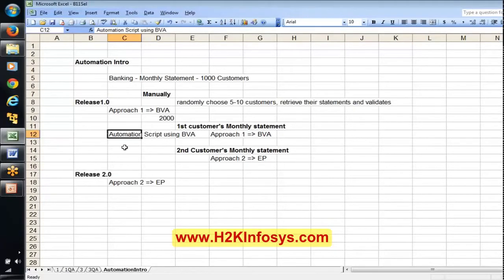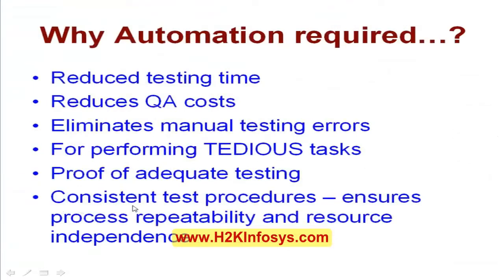Once you build a script, there won't be many changes — if you have changes, it's a kind of maintenance. The automation script built on, say, boundary value analysis will be used consistently across all releases. And since the script is built once, another resource can pick it up and work on it. These are the main points explaining why we generally go for automation.